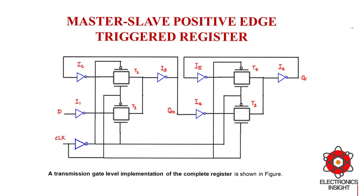Now with clock equal to 1, T2 turns on and T1 is in the off state, so the master stage will stop sampling the input and go into hold mode to retain a stable output. In the slave stage, for the positive latch implementation, when clock becomes 1, T3 turns on and T4 is in the off state. So the QM output is sampled and copied to the output Q.